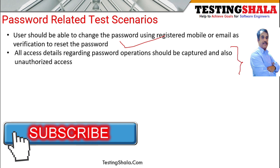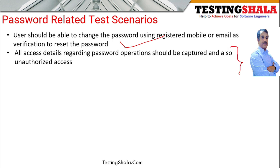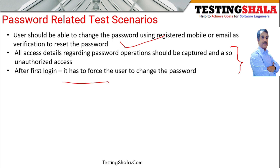The next test scenario is that all access details — whoever logs in with a username or password from different IP addresses — should be captured. If someone wants to validate where the application was accessed from or whether the password was hacked, all those audit trial log files or trace files should be available.